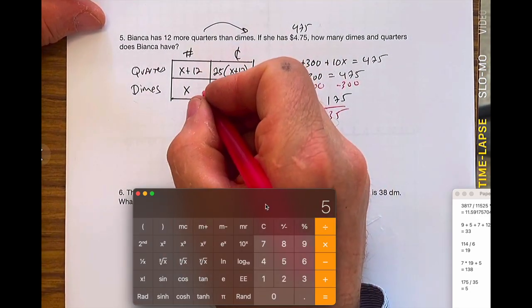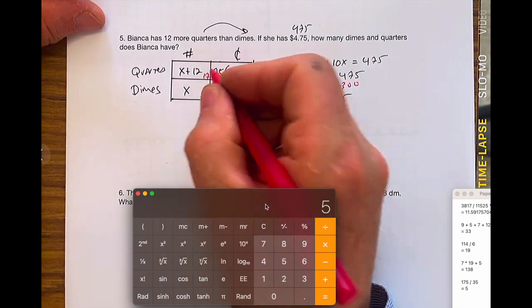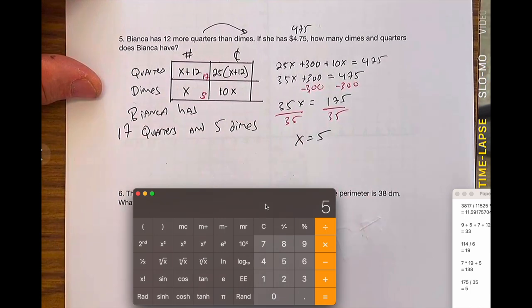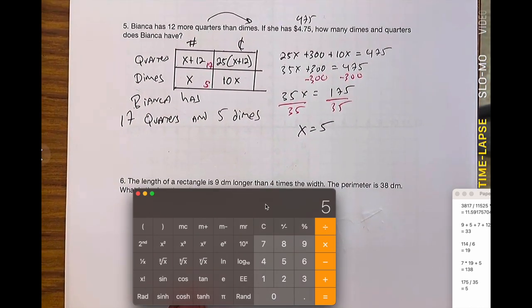That means I've got 5 dimes. 5 plus 12 is 17 quarters. Bianca, 17 quarters is 5 times. That is it for question number 5. Have a good day.